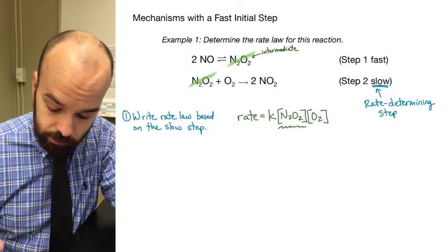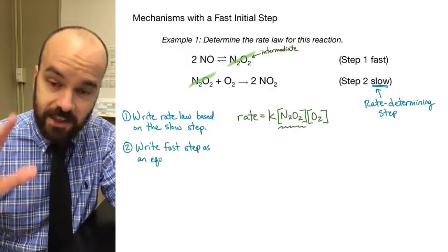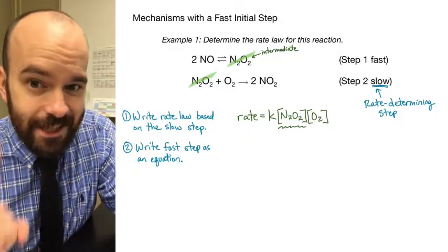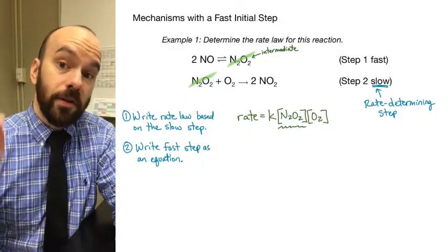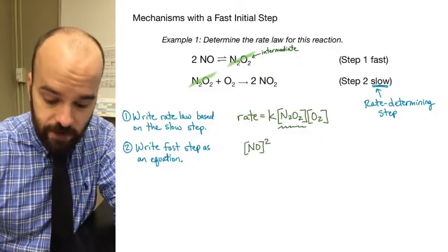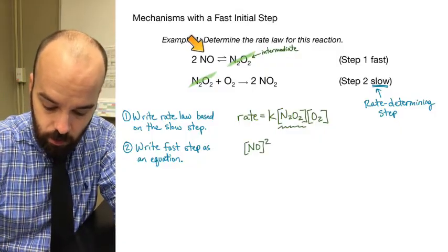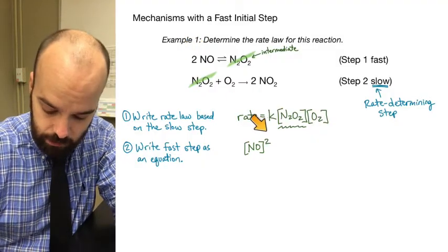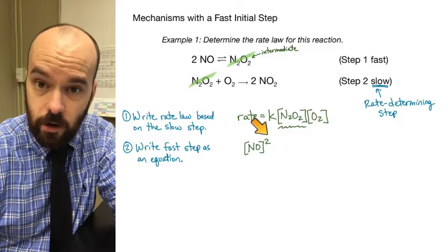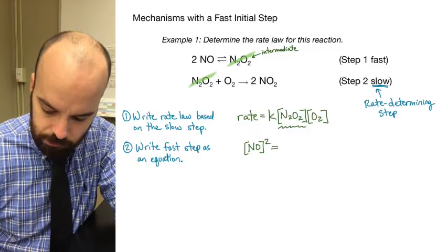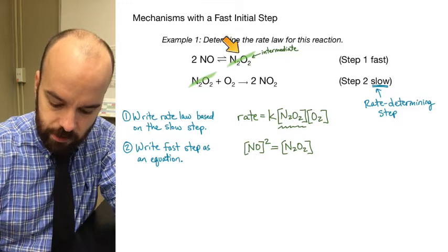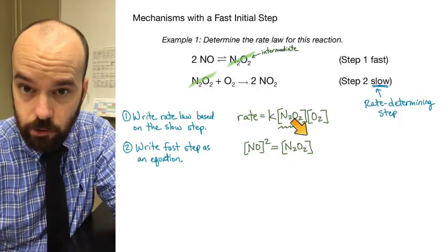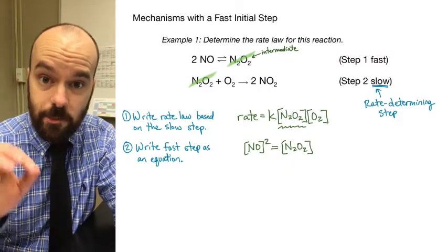To figure out what to substitute, we write the fast step as a mathematical equation. This equation isn't technically true, but it helps us solve the problem quickly. We look at that fast step and write [NO]² — because the coefficient before NO is two — and set that equal to the product of that first step, [InO₂]¹, since there is just one InO₂.